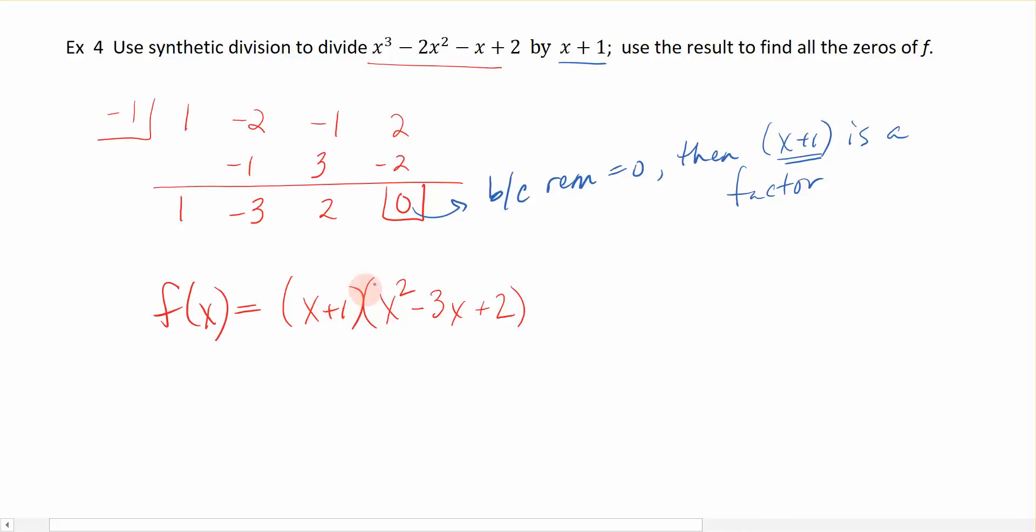So that means I now have x squared minus 3x plus 2 as the remaining factor, right? Because if I take this factor and multiply it by this second trinomial, I would get back what I started. Okay, we know that so far.